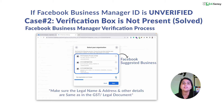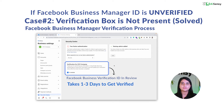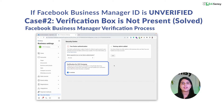Now choose the email verification method, since the success rate is very high with this option. Enter your business email ID and you'll receive a code on that ID. Enter the code and click on Done. Your Facebook Business Manager ID is now in review. It generally takes one to three days to get verified, but sometimes it gets verified within a couple of hours. You can check the Facebook Business Manager status with the link provided.